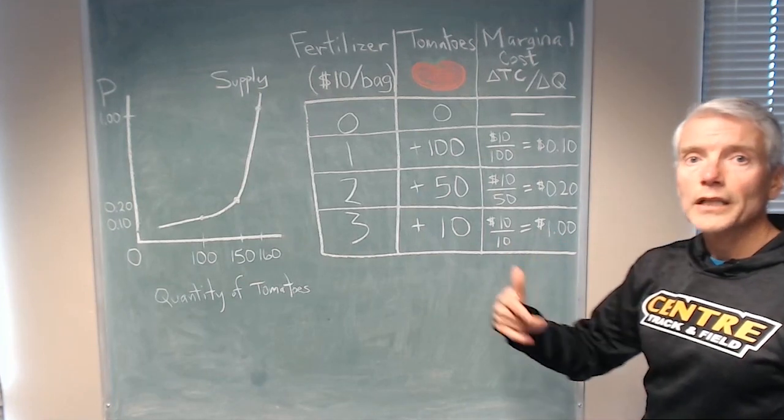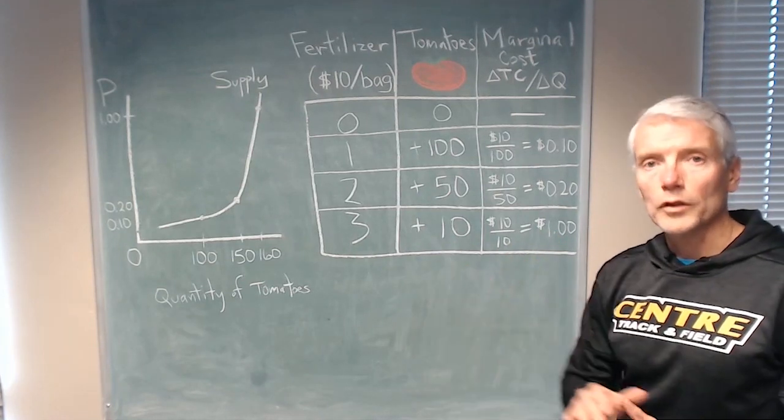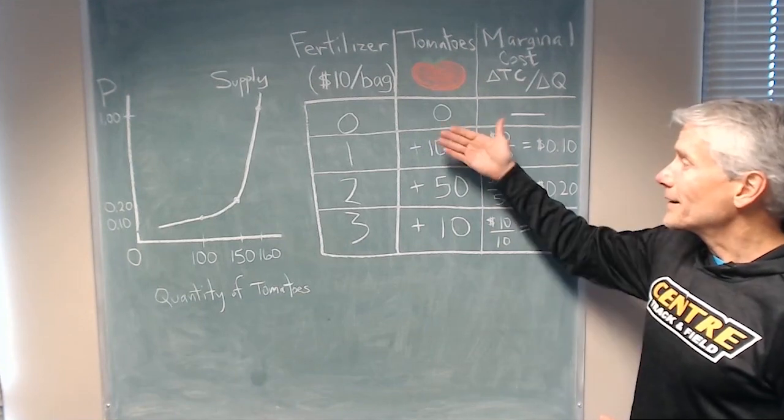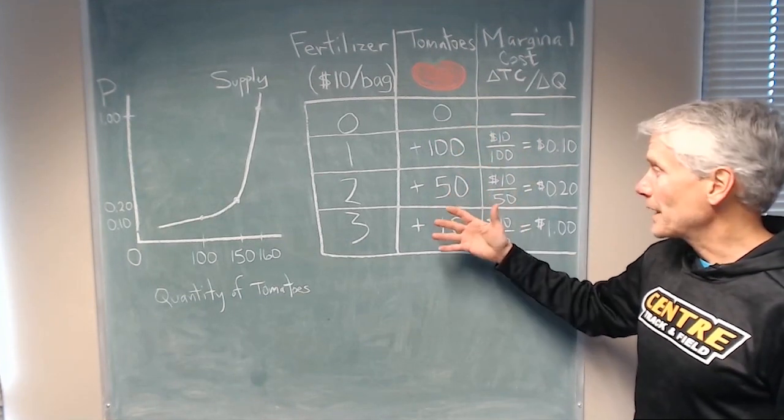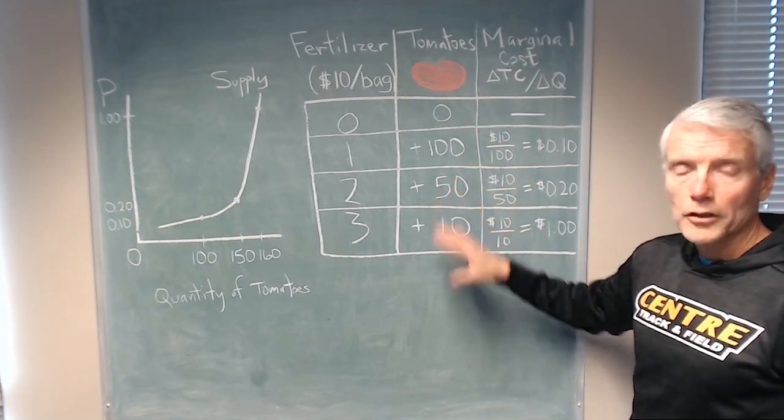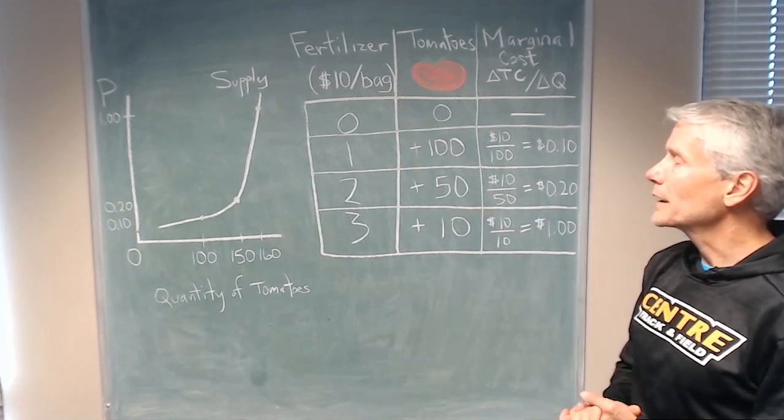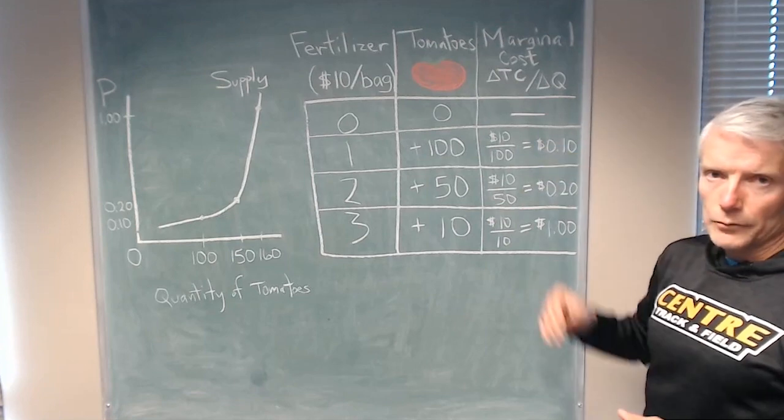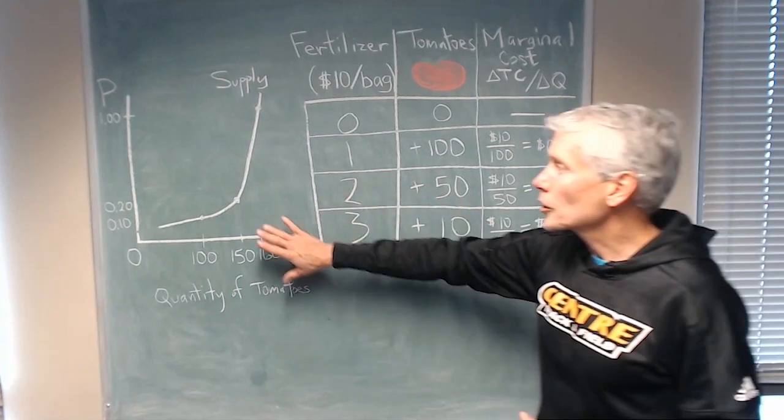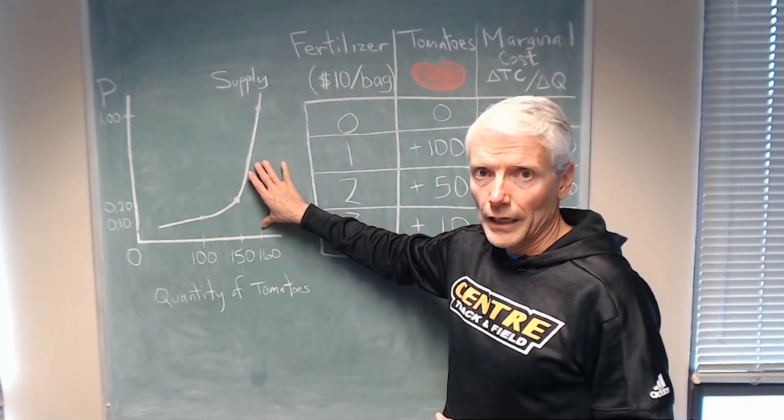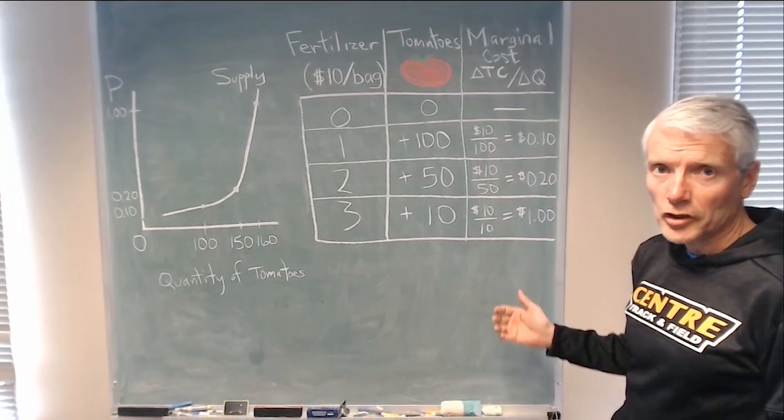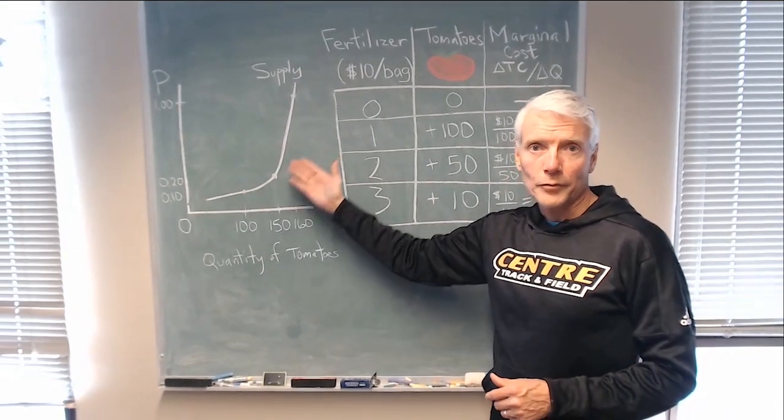So those 10 tomatoes cost an additional $1 per unit. That decreasing marginal benefit from adding fertilizer, we call it the diminishing marginal product of that input, leads to an increasing marginal cost. And the marginal cost is the height of the supply curve. So this increase in marginal cost leads to the supply curve sloping upward like this.